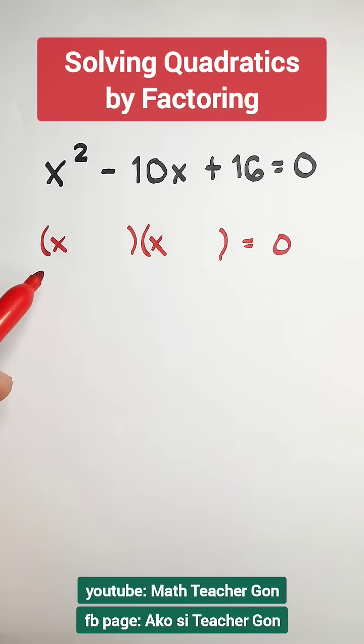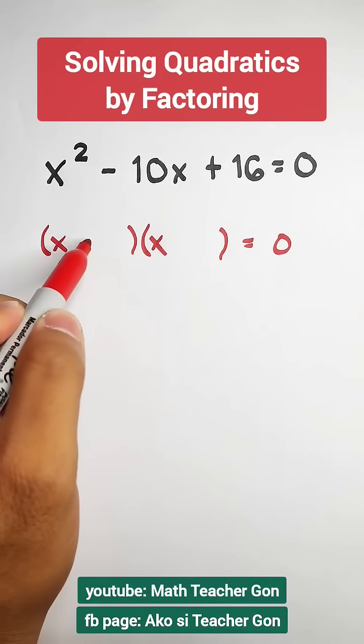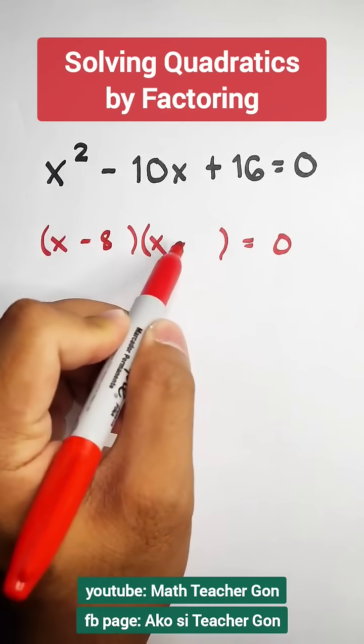This is positive 16, and the sum is negative 10, meaning the two numbers are both negative.